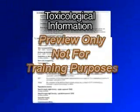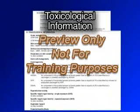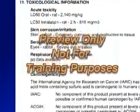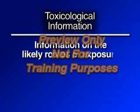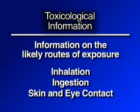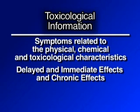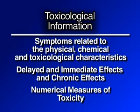Section 11: Toxicological Information. Provides a description of the various health effects and the available data used to identify those effects, including information on the likely routes of exposure such as inhalation, ingestion, skin and eye contact. Also includes the symptoms related to the physical, chemical, and toxicological characteristics, delayed and immediate effects, chronic effects from short and long-term exposure, and numerical measures of toxicity such as acute toxicity estimates, if known.